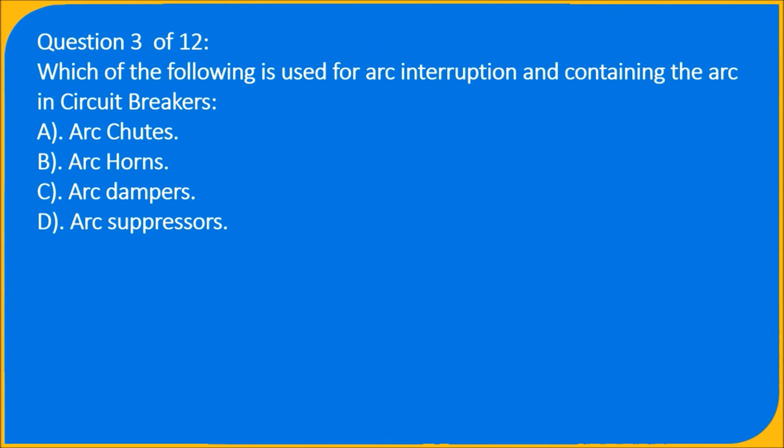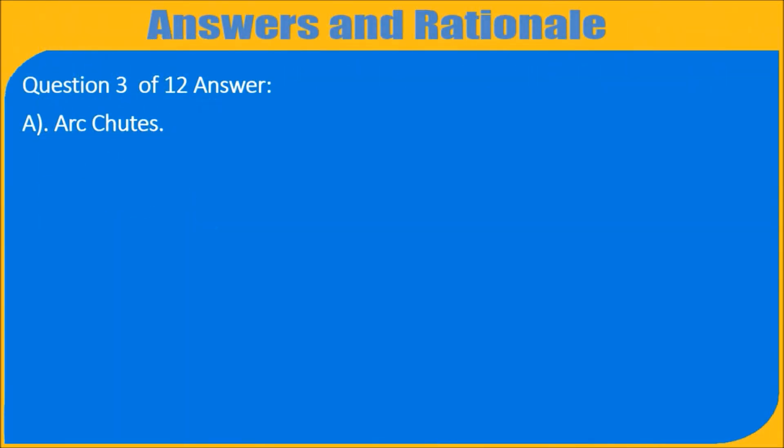Question 3 of 12: Which of the following is used for arc interruption and containing the arc in circuit breakers? A) Arc chutes, B) Arc horns, C) Arc dampers, D) Arc suppressors. Question 3 of 12 answer: A) Arc chutes.